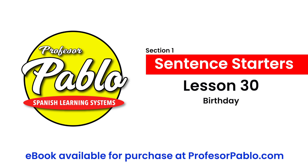November 8th: mi cumpleaños es el 8 de noviembre. My birthday is — plug in the number, add the word de, and then plug in the month. There's another diphthong, the I-E, it just glides — el 8 de noviembre. My birthday is December 20th: mi cumpleaños es el 20 de diciembre. There's that I-E diphthong again — diciembre.